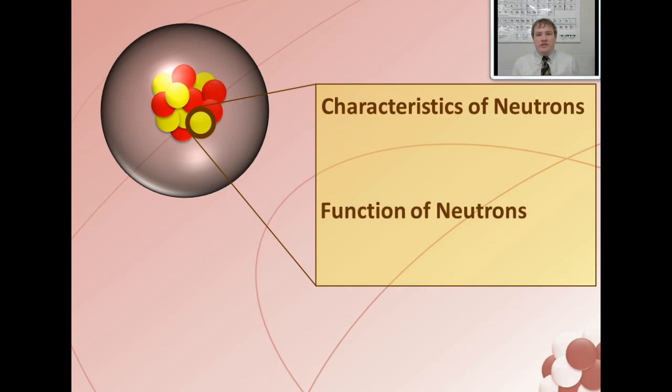Now, neutrons have certain characteristics and functions just like the protons do. Just like protons were located in the nucleus, neutrons are located in the nucleus. However, unlike protons, which had a positive one plus charge and attracted electrons, neutrons get their name from being neutral because they actually don't have any charge at all. Neutrons have no charge, just mass. They have a mass of one atomic mass unit just like protons do. That's why that nucleus is so dense and massive.